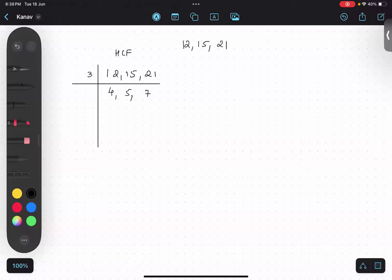Is there anything common other than this? No. So, simple. Three. HCF is 3. Understood. Yes.